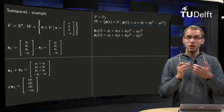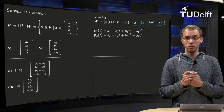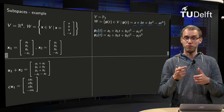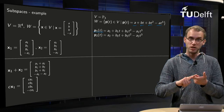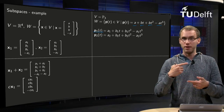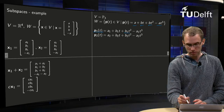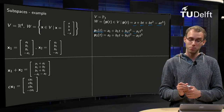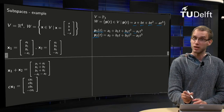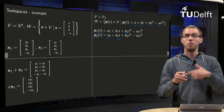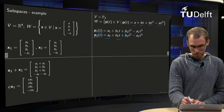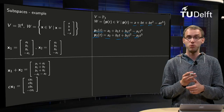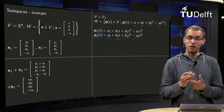Then we choose two arbitrary polynomials in W. For P1, we choose constant coefficient A1 and t-coefficient B1, and the other two are fixed: the t² coefficient is B1 and the t³ coefficient is -A1. Similarly for P2, we choose A2 and B2 freely, and the remaining coefficients are fixed as B2 and -A2. We again have to check whether the sum is still in W and whether a scalar multiple is also in W.